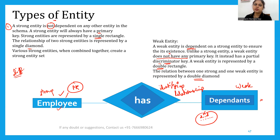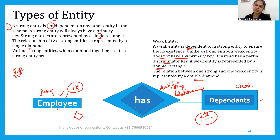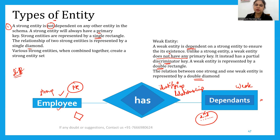If there is a strong entity, it will be related to a single diamond. If there is a weak entity, it will be attached to identifying relationships. Keep these points in mind when learning the types of entities.